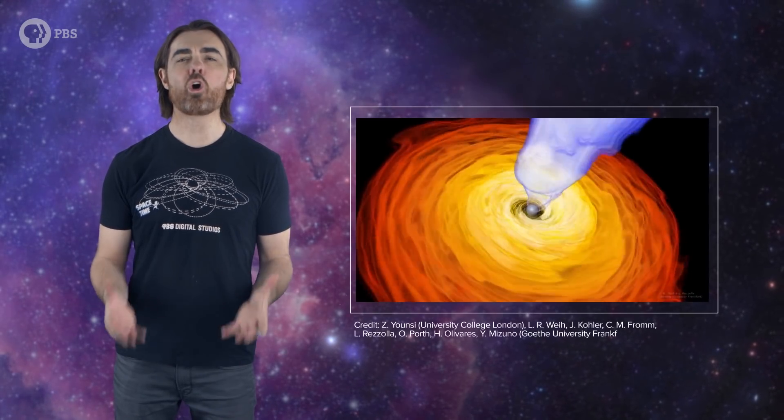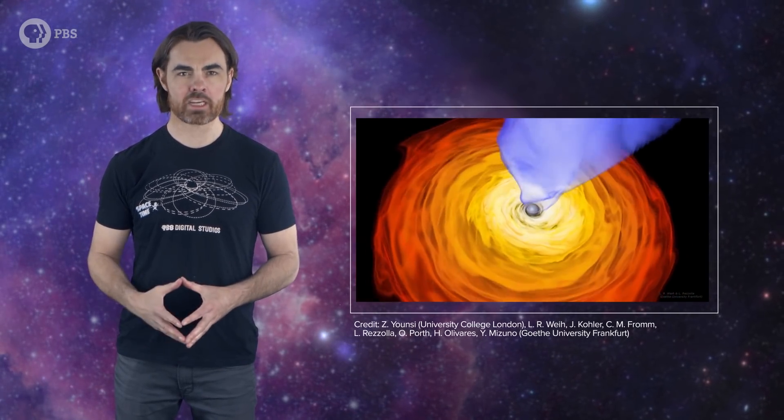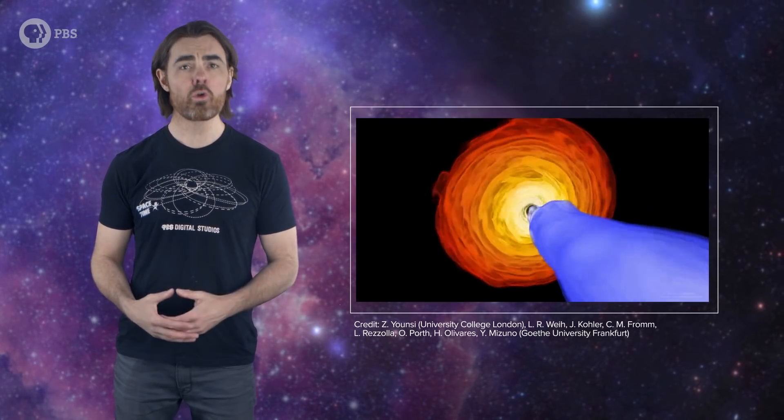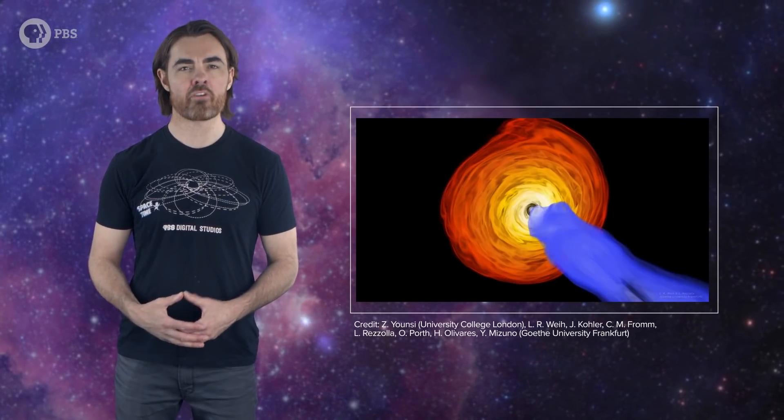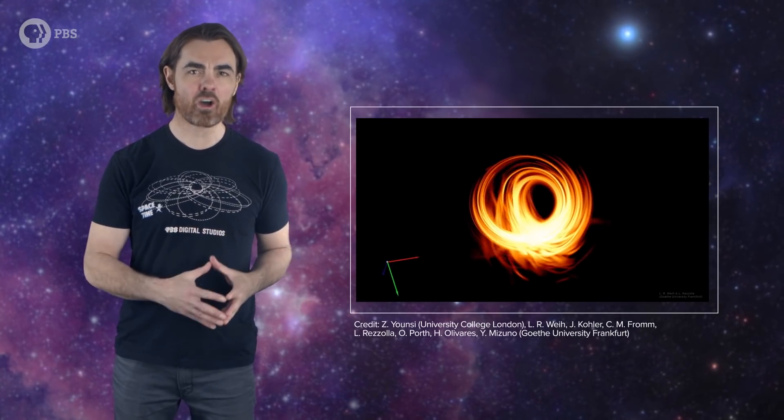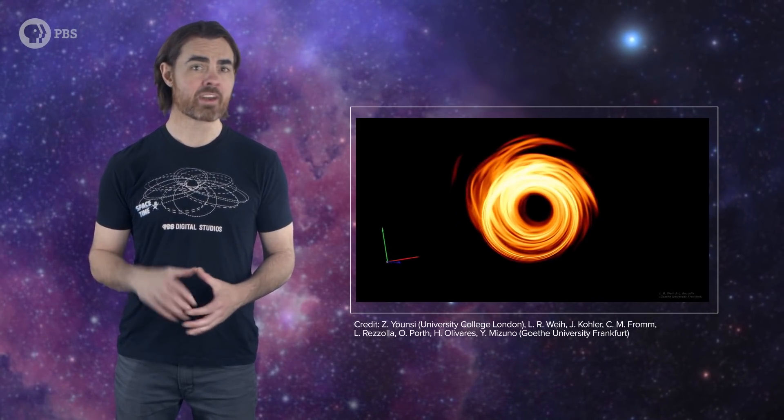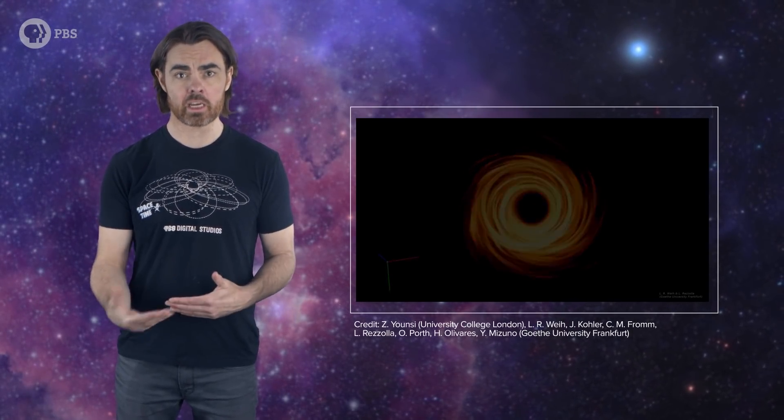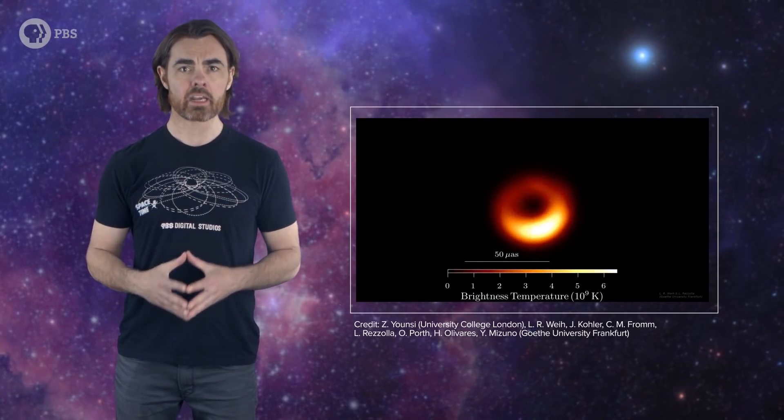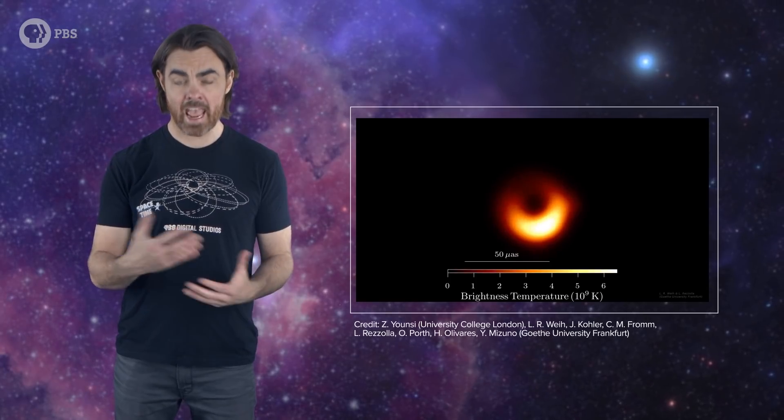The team simulated this whole process with a magnetohydrodynamic simulation that weaves in all the physics of fluid flow and magnetic fields, and in this case with the addition of the warped spacetime of a black hole using Einstein's theory of general relativity. Finally, they simulated the blurring of the image due to the whole observational process. The team simulated a wide range of parameters like black hole mass and spin rate, while they were able to nail down the rotational axis direction based on the jet that we see leaving the galaxy. With that constraint, they could find the configuration that fit the actual image.